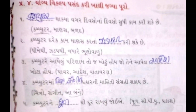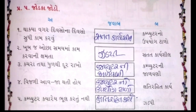વિદ્યાર્થી મિત્રો, નંબર 5 - જોડકા જોડો. આ બે વિભાગ આપેલા છે અને બે ની વચ્ચે, ટેક્સ્ટબુક અને નોટબુક માં લખવાનું છે.